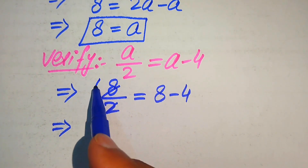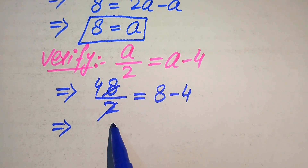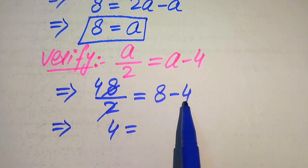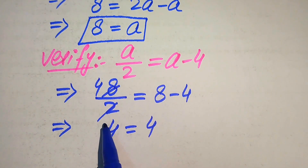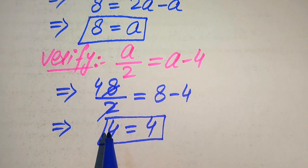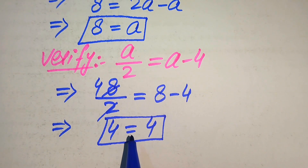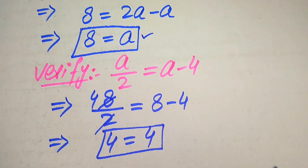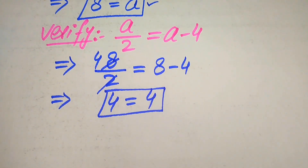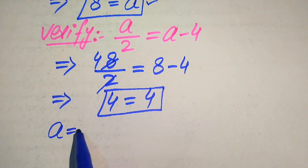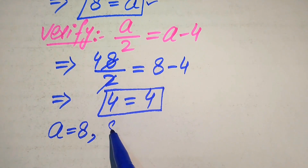2 times 4 is 8, so we get 4 is equals to 8 minus 4, which gives 4 is equals to 4. Left-hand side equals right-hand side, so we conclude that the value a equals 8 satisfies the given equation.